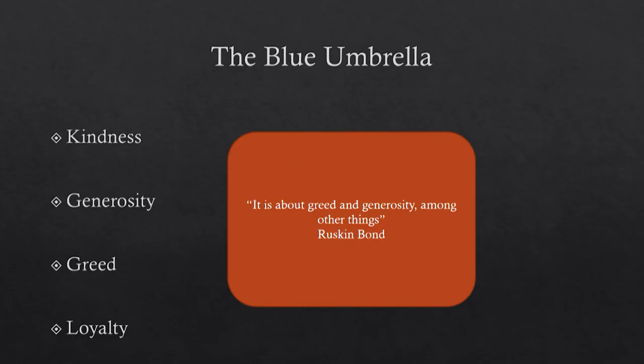The major themes of this particular work are kindness, generosity, greed, and loyalty. Ruskin Bond himself has written that this is a work about greed and generosity among other things. He highlights these two qualities, but let us also look for other themes which are underpinning the narrative framework of this apparently simple tale of The Blue Umbrella.